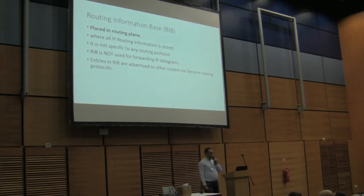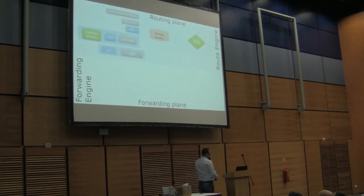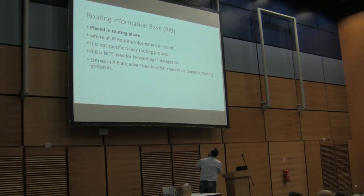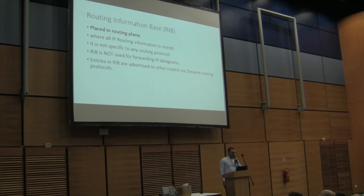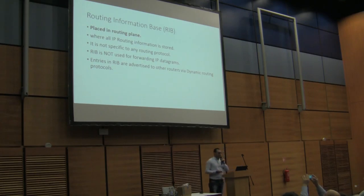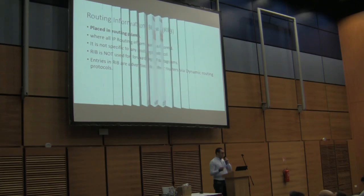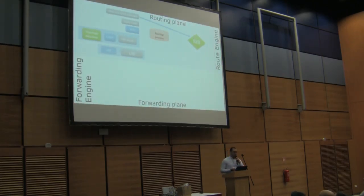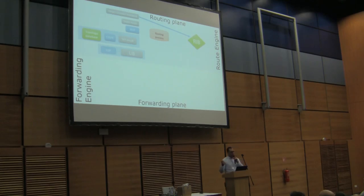First, we need to talk about the RIB — the Routing Information Base. It's the place in the routing plane where all IP routing information is stored. It's not specific to one routing protocol, and it's not used for forwarding IP datagrams. Entries in the RIB are only advertised or exchanged between routers. As we can see in the diagram, direct routes are installed directly to the routing table, while static, BGP, or OSPF routes pass through the route process before being installed in the RIB.